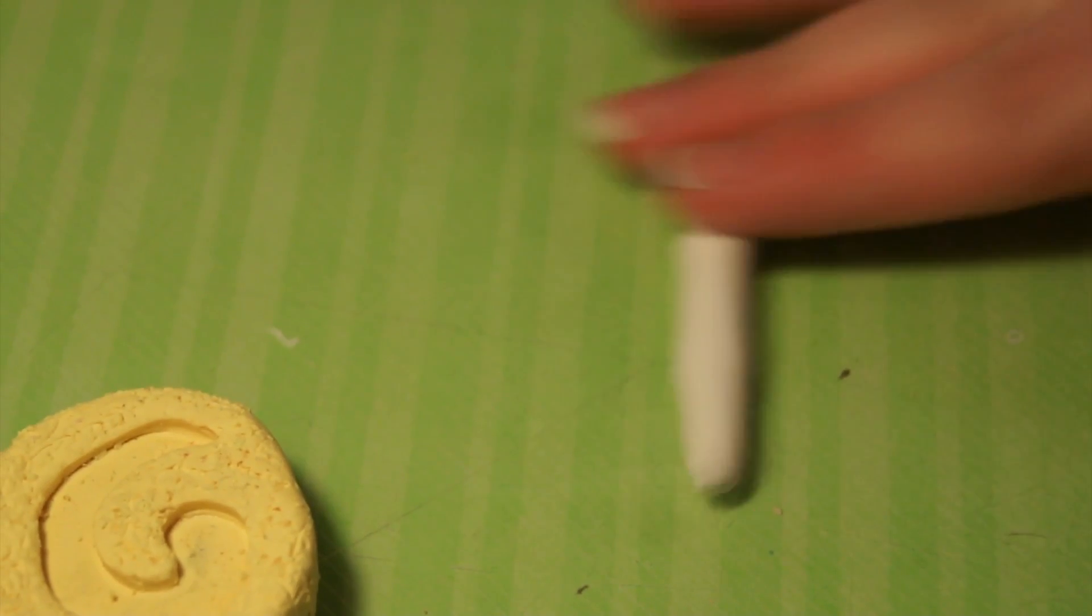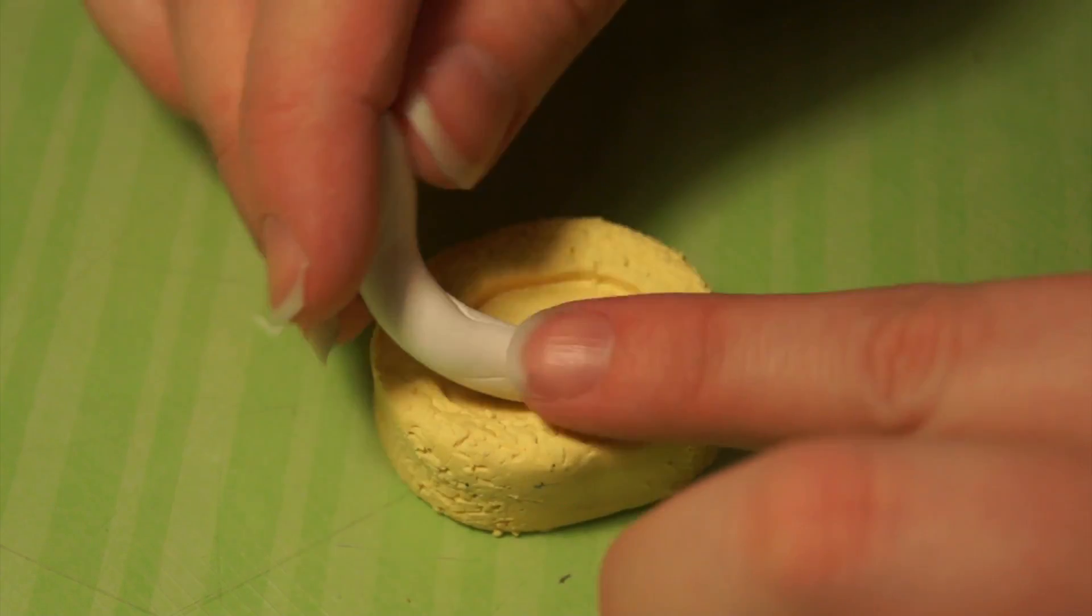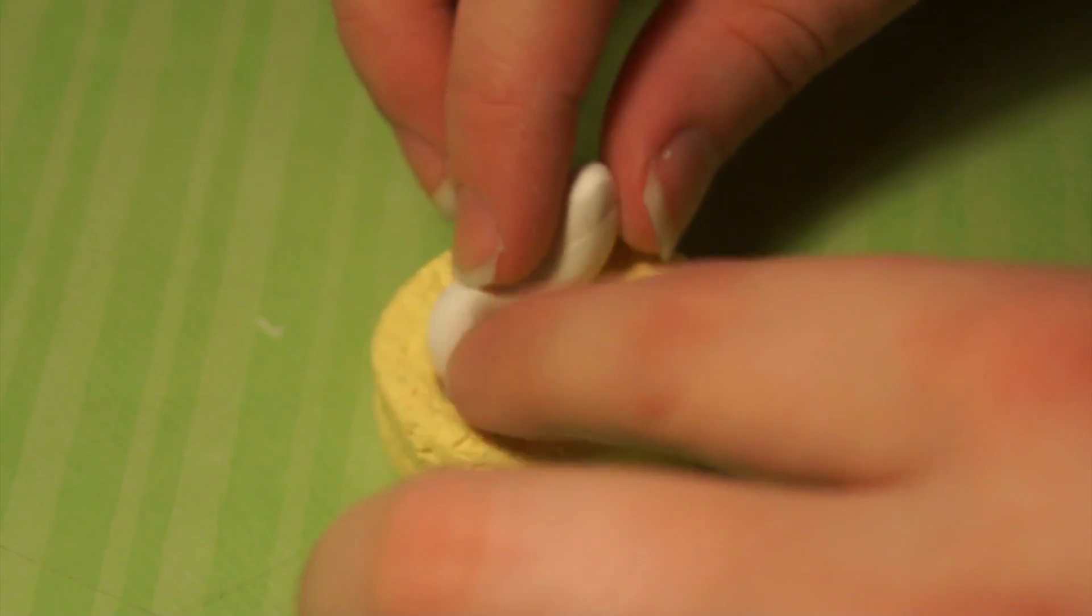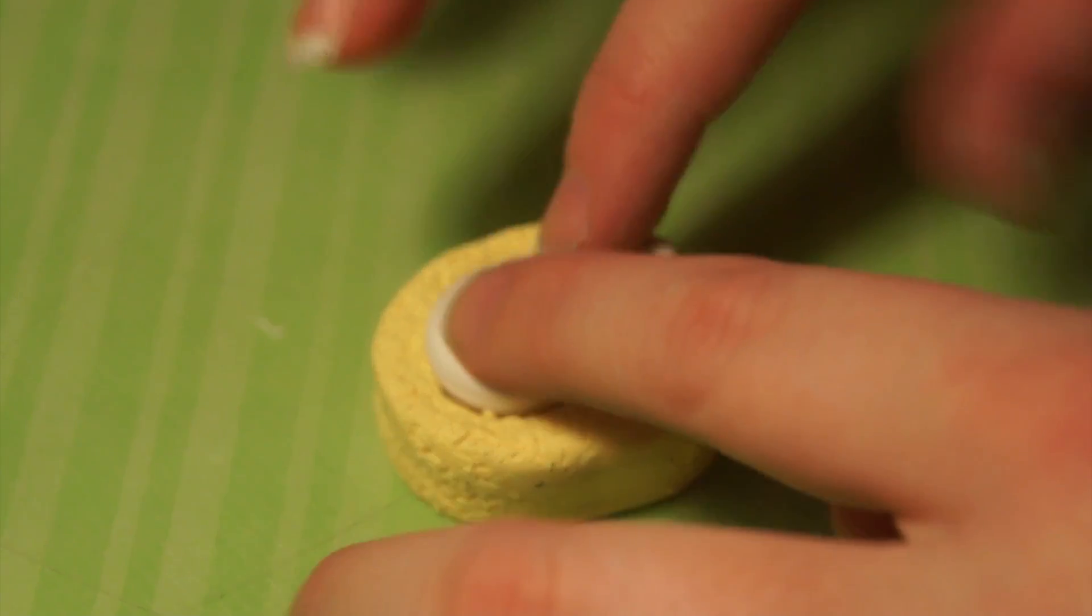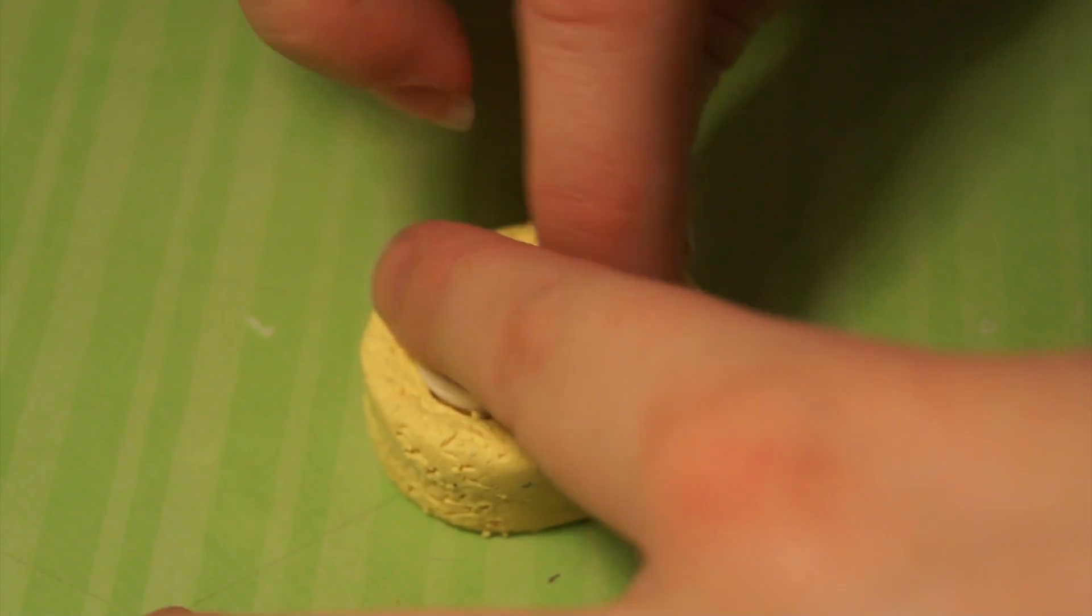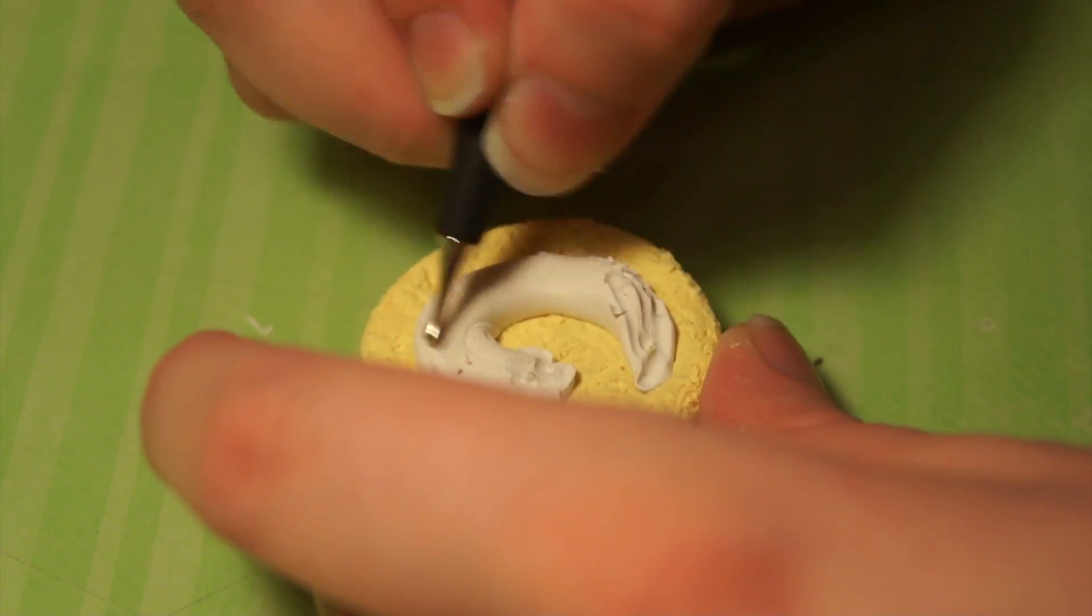Then I'm just going to roll out some white polymer clay for the filling. Usually I use deco den cream but since I'm going to bake these, I figured I might as well just make it all in polymer clay. So I'm just going to put that in a spiral shape and then using a ball tool I'm going to texture it a little bit.